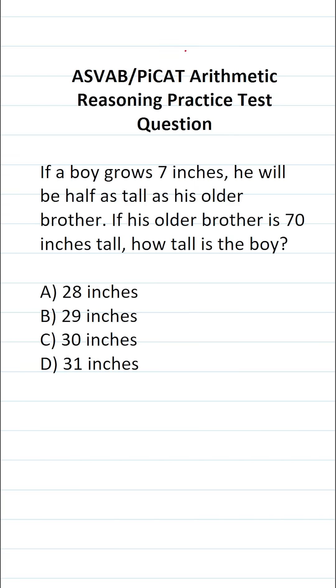This arithmetic reasoning practice test question for the ASVAB and PiCAT says: If a boy grows 7 inches, he will be half as tall as his older brother. If his older brother is 70 inches tall, how tall is the boy?